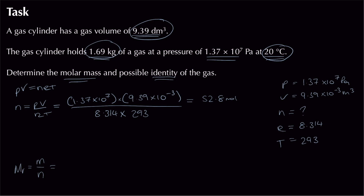To find molar mass, convert mass to grams: 1.69 × 1000 = 1690 g, then divide by 52.8 moles. The result is 32.0 g mol⁻¹. Looking at the periodic table for gases with Mr = 32, the only diatomic molecule that fits is oxygen gas, O₂. Marks are awarded for conversions, rearranging, calculating Mr, and identifying the gas.